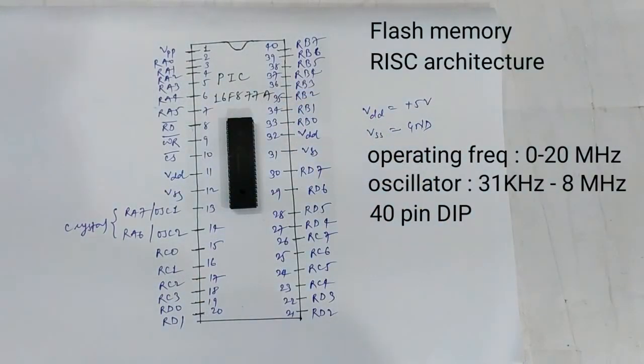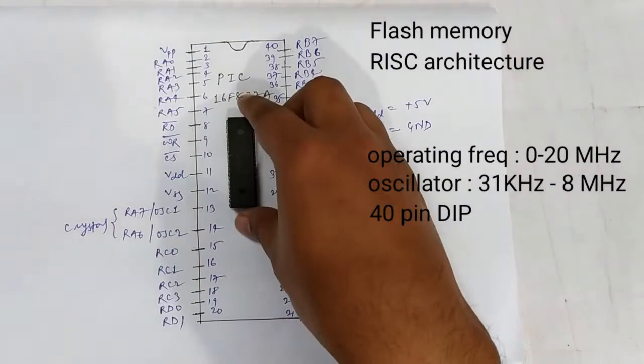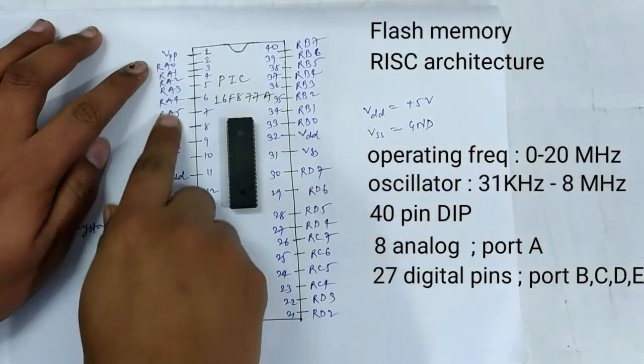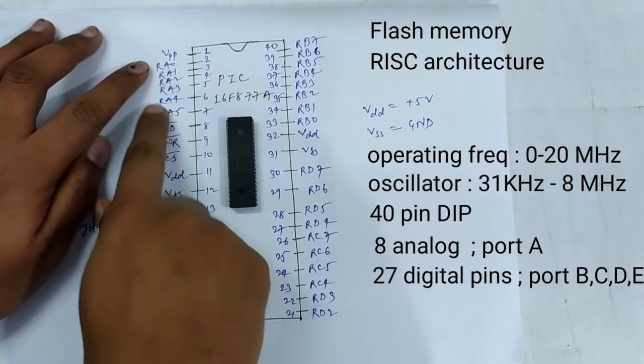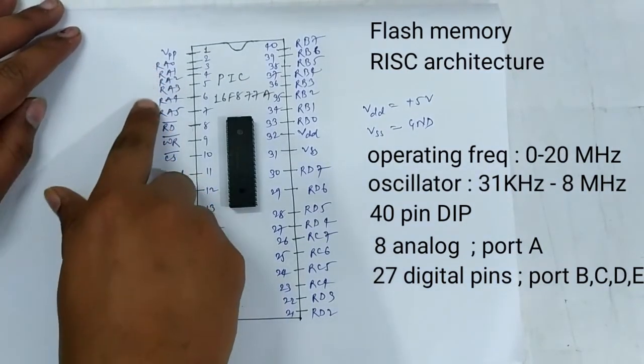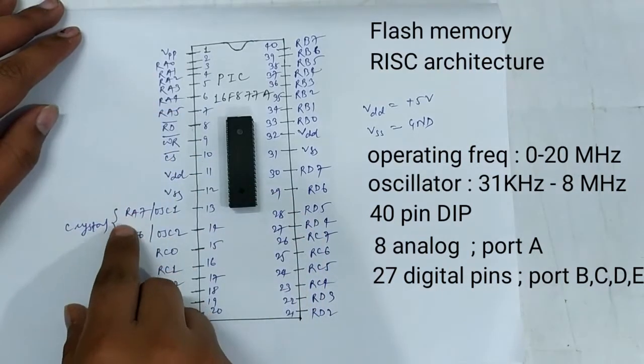There are 8 analog pins. As you can see here from RA0 to RA5, there are 6 analog pins. There are 2 more analog pins here.